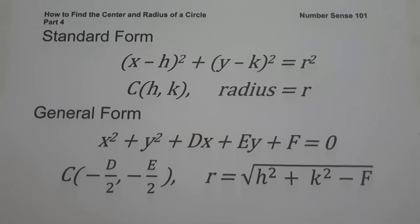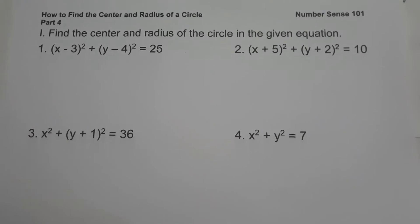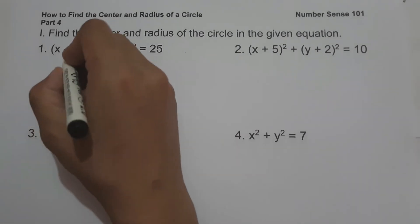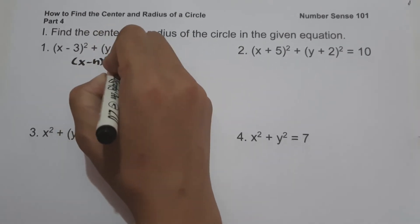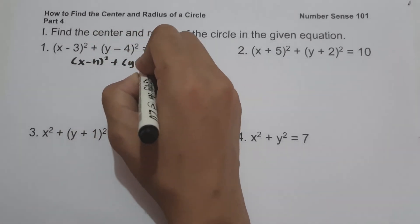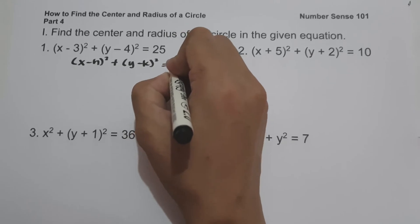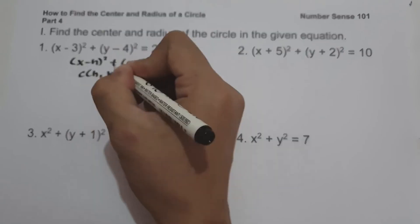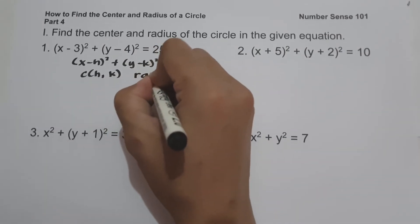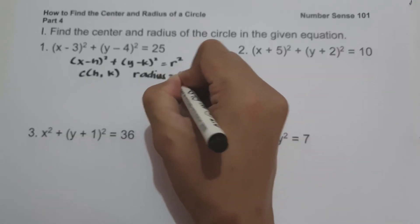So let's start and have an example. On the given set of examples, we are going to find the center and radius of a circle from the given equation. On example numbers 1 to 4, all of the given equations are written in the standard form: (x minus h) squared plus (y minus k) squared equals r squared, where the center is (h, k) and the radius is r.